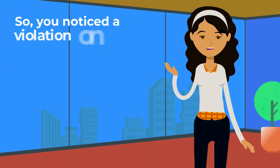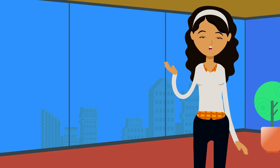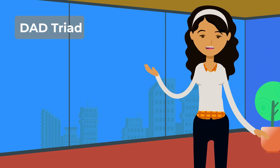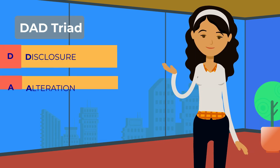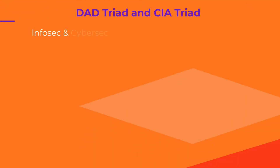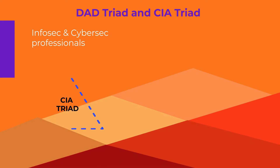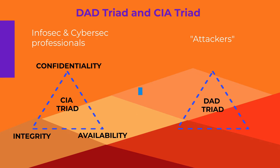So, you noticed a violation on SEA Triad? It's time to talk about the DAD Triad. The meaning of DAD is Disclosure, Alteration, and Destruction. Typically, information security professionals want to protect the confidentiality, integrity, and availability of information, but attackers are seeking to disrupt the security environment through Disclosure, Alteration, and Destruction.